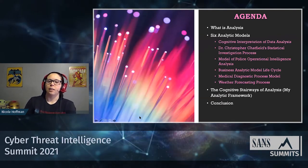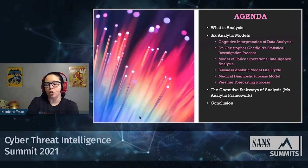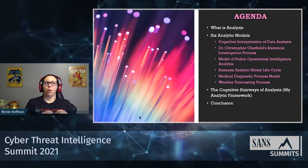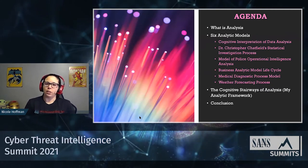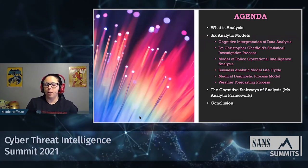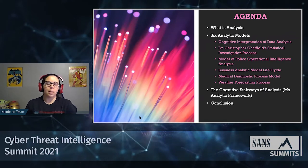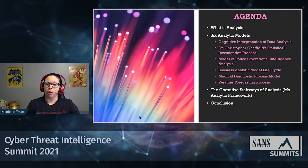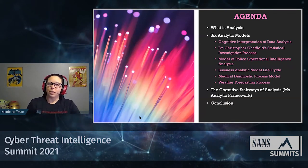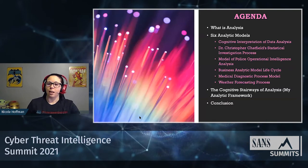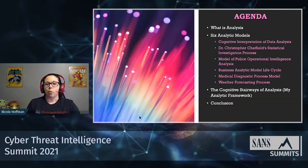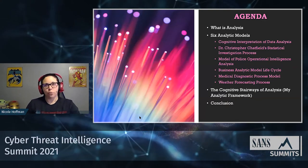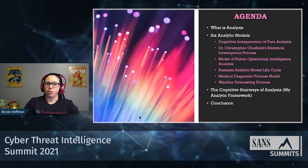Going over the agenda: I'm going to start by discussing what analysis is and some of the challenges I faced when I started my research. Then I'll go over six analytic models and discuss the key takeaways from each that I used to create my own framework. Currently there are three stairways in the Cognitive Stairways of Analysis, and I'll be going over each one, then discuss helpful resources to conclude.